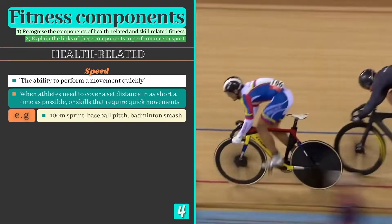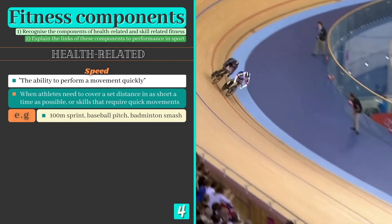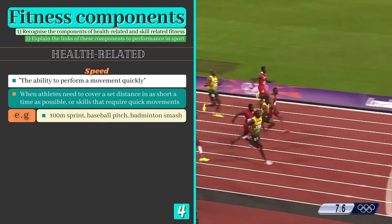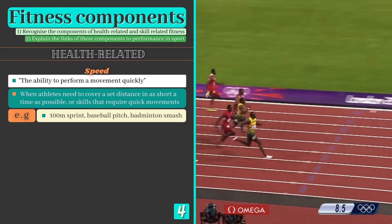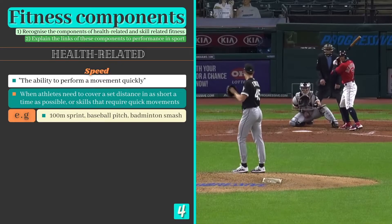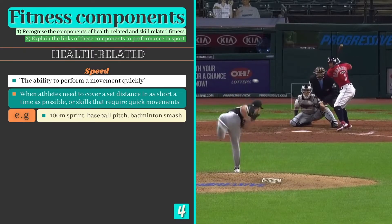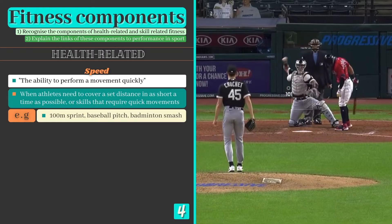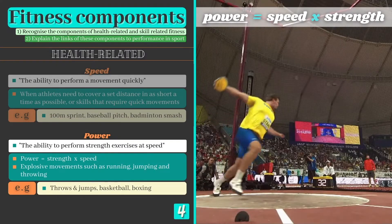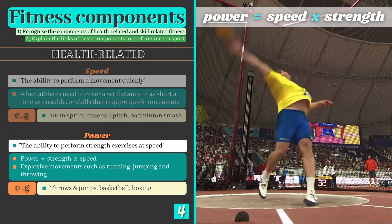Our fifth component is speed, or the ability to perform a movement quickly. Speed is important for sprinters who need to cover a set distance in as short a period of time as possible, but can also be seen when pitching in baseball, releasing a javelin or serving in tennis.